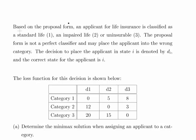In this presentation we're going to look at decision theory with an actuarial example. Based on the proposal form, an applicant for life insurance is classified as standard life, impaired life, or uninsurable.